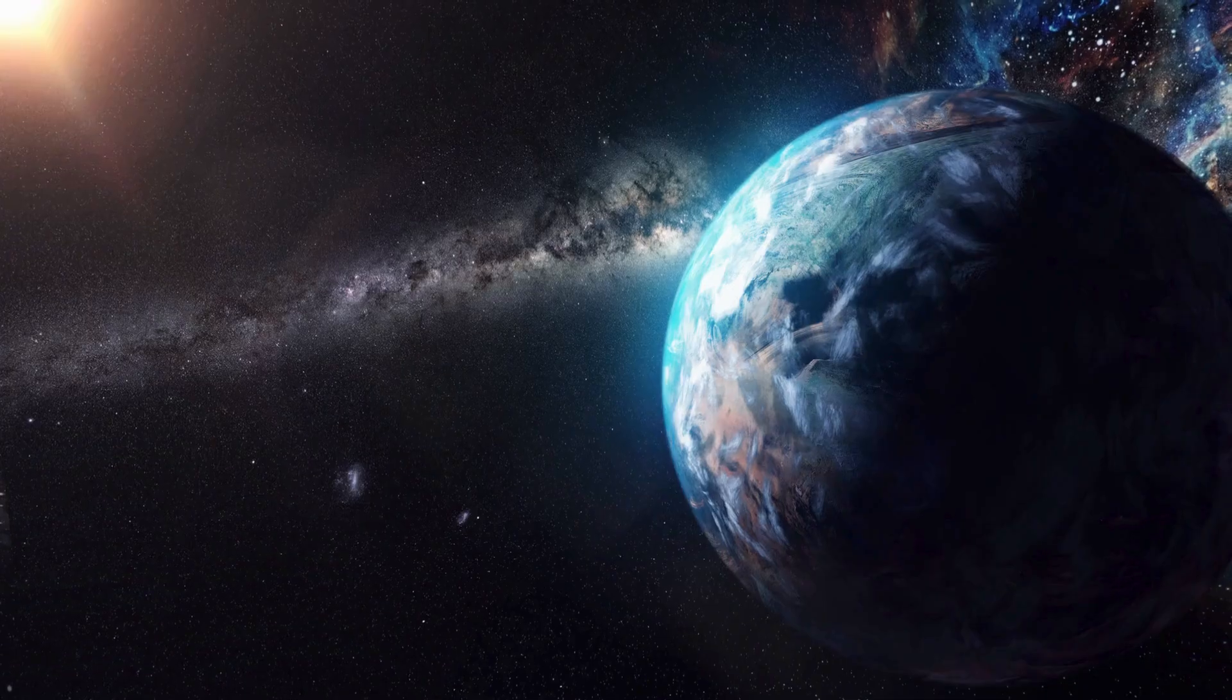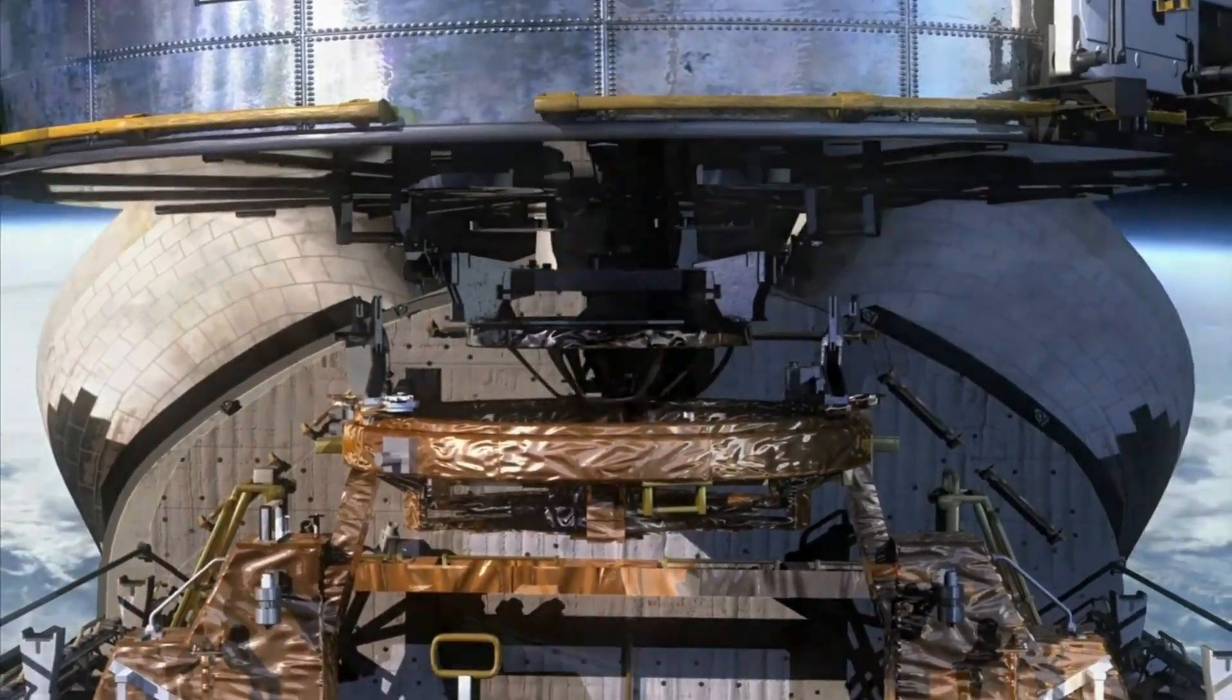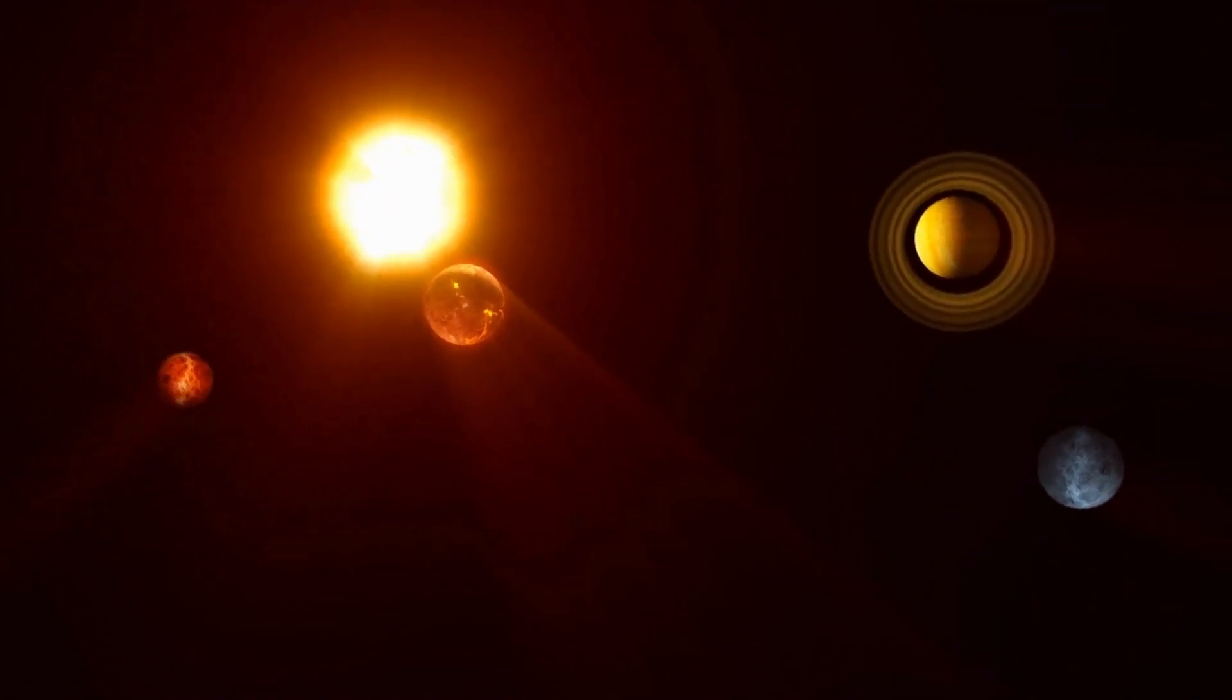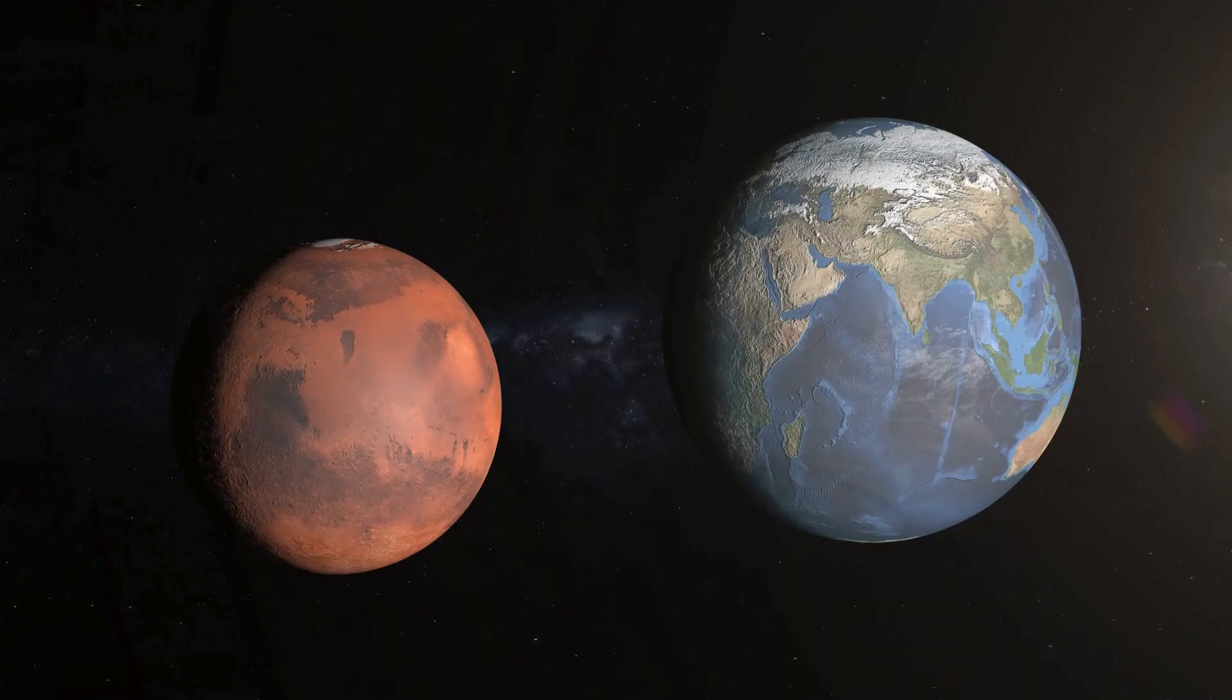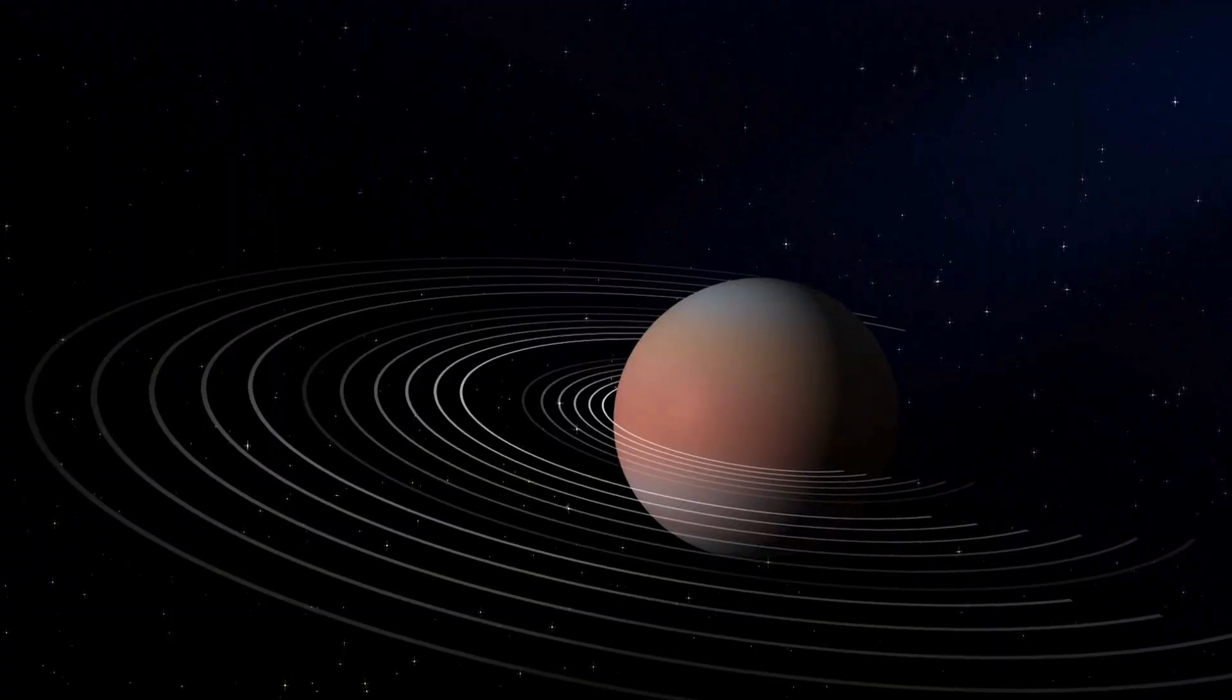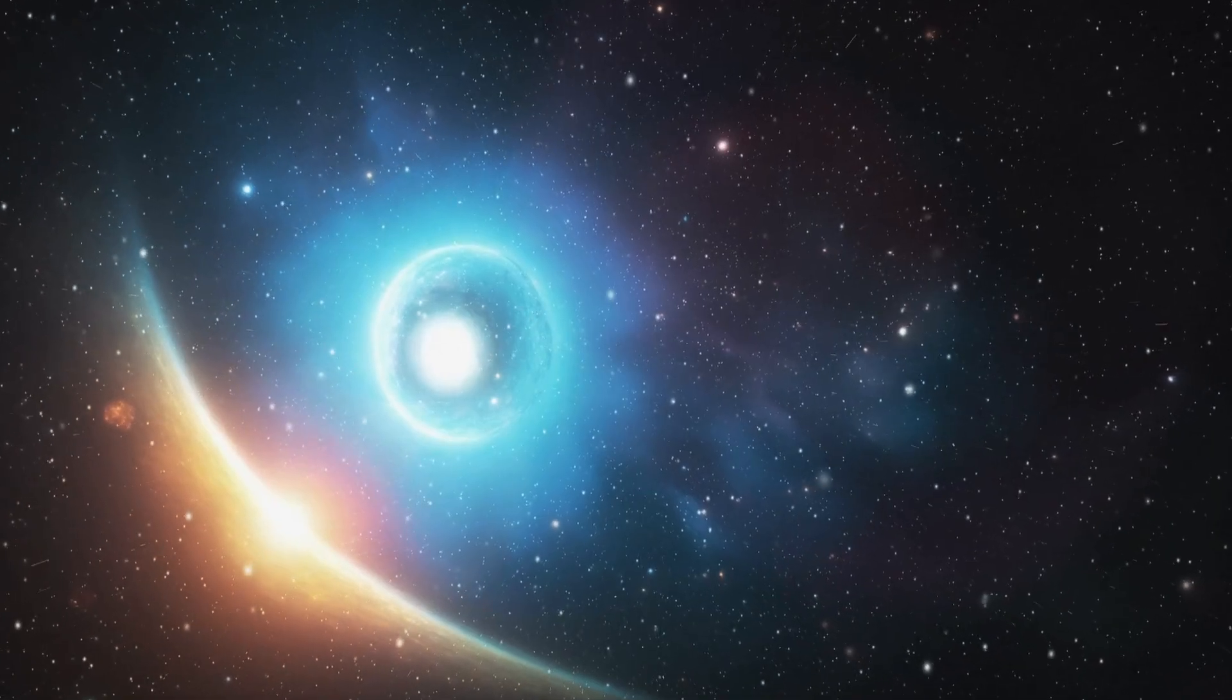Voyager 2 was launched on August 20th, 1977, part of a mission so ambitious it bordered on insanity. A spacecraft with less memory than a modern watch, powered by less than 23 watts of radio strength, built not to return but to fly forever. It was sent to explore the gas giants: Jupiter, Saturn, Uranus, Neptune, and then to continue into the unknown.